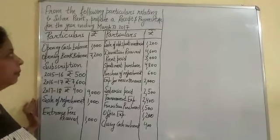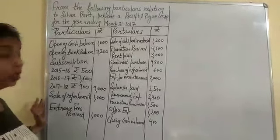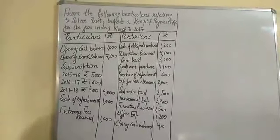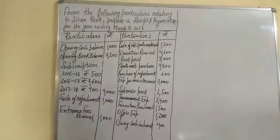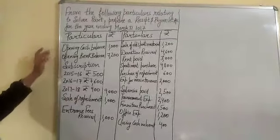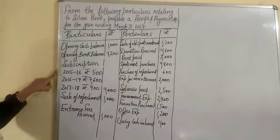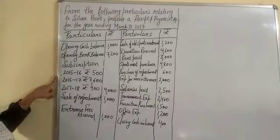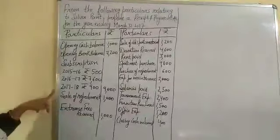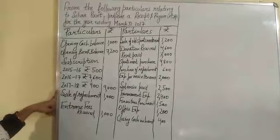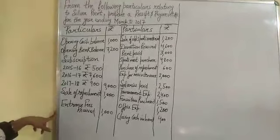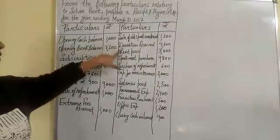We are given a question from the final particulars relating to Silver Point: prepare a receipt and payment account for the year ending 31st March 2017. We are given opening cash balance, opening bank balance, subscription of 2015-16 which is of a previous year, 2016-17 that is of the current year, 2017-18 which is the next year, and we are given sale of refreshment and transfers received, sale of old sports material, and donation received.